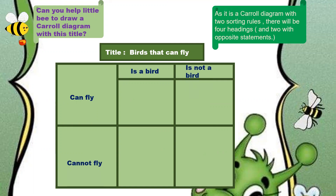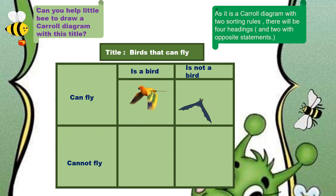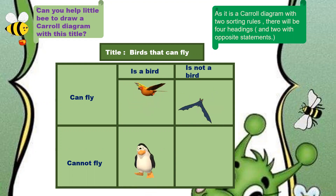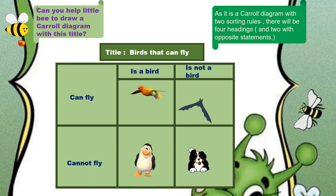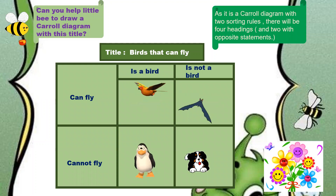Cannot fly. This is a bird and it can fly. Penguin cannot fly — it is a bird. Dog is not a bird and it cannot fly.